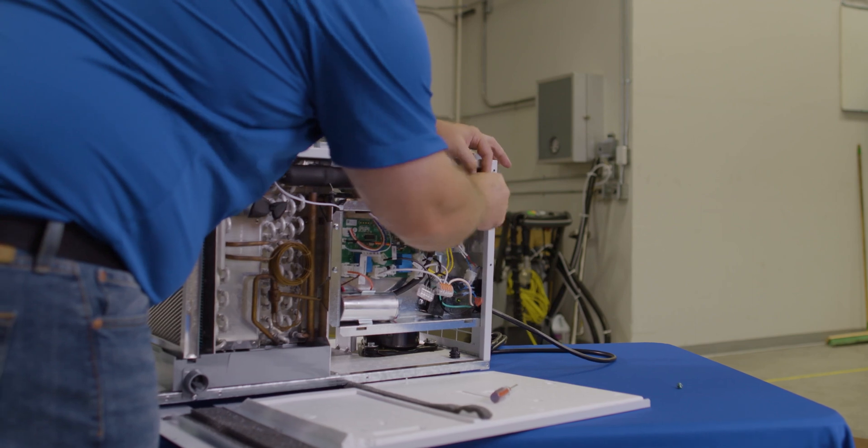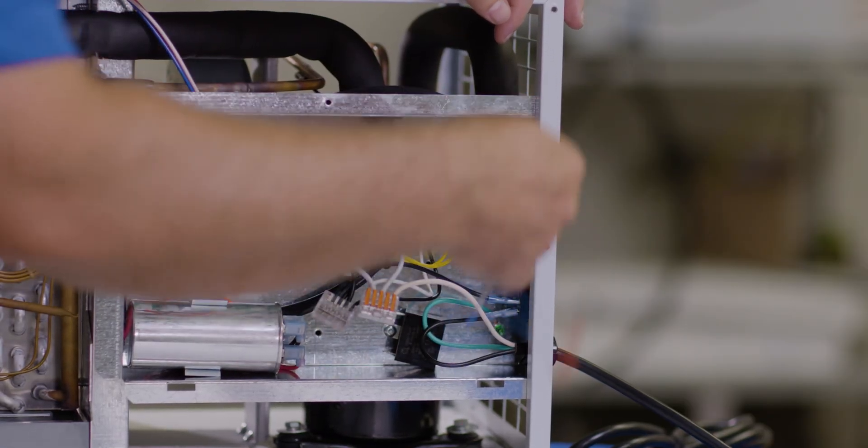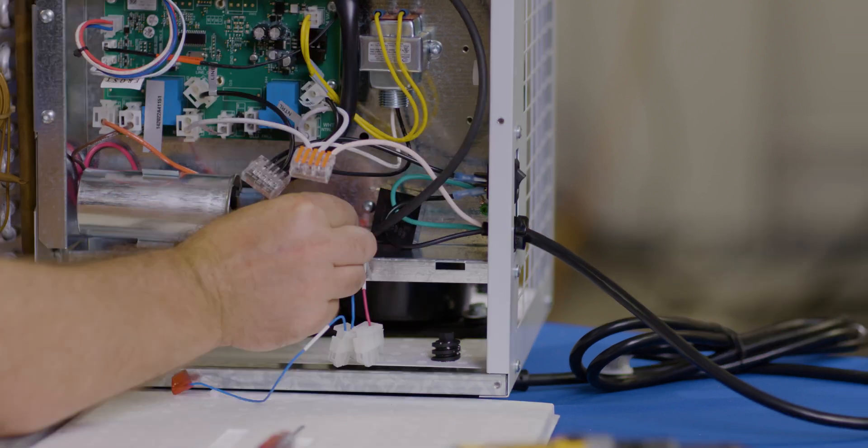Once attached we will run our wiring down through the access hole in the top of the circuit panel box. We can then attach our five wires back to the unit.